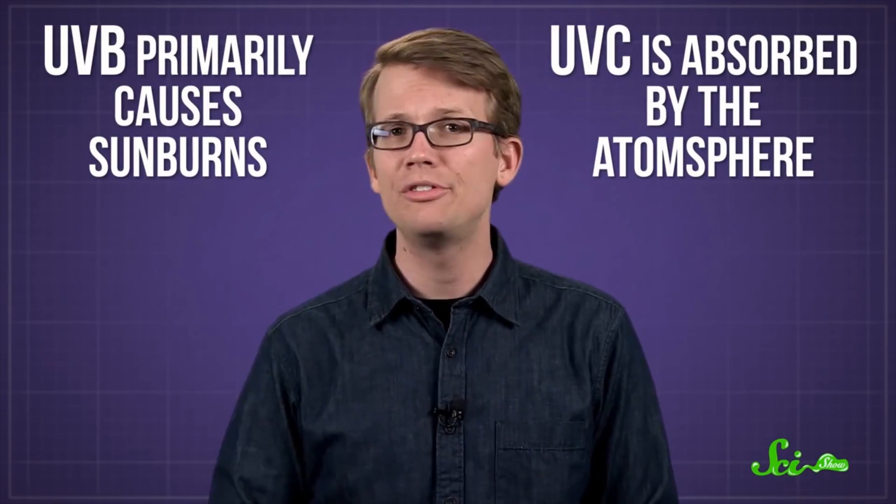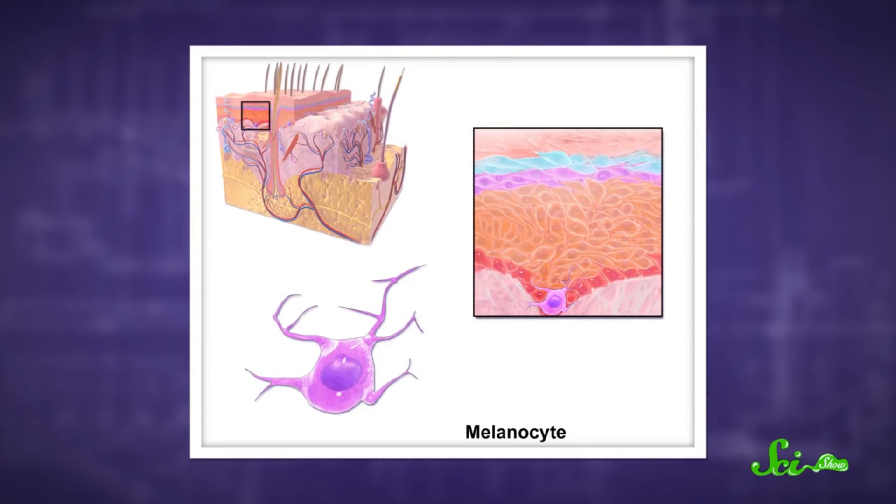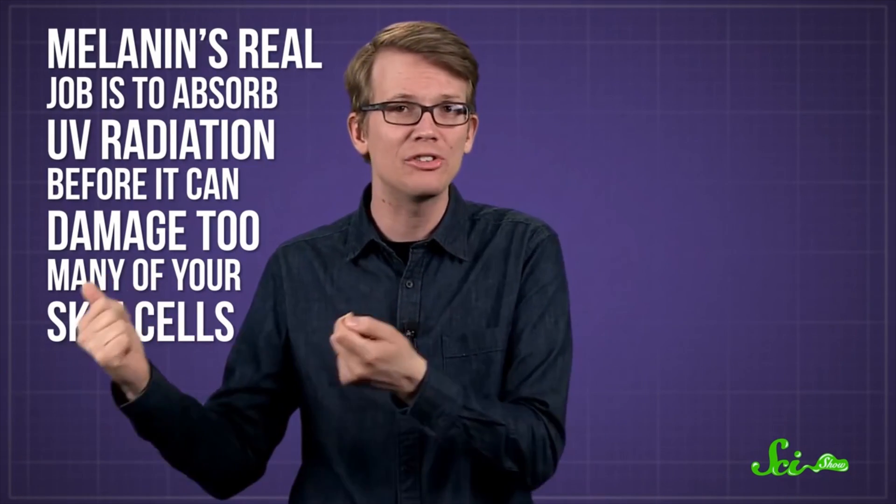But UVB can cause enough damage to sunburn, and UVA might make you tan. When receptors in special skin cells called melanocytes detect the UVA radiation in sunlight, they start producing extra melanin, a pigment that darkens skin color.